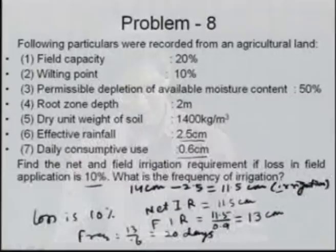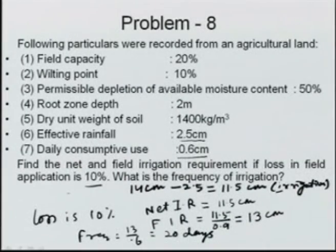Based on the field irrigation requirement of 13 cm and daily consumptive use of 0.6 cm, irrigation frequency is approximately 20 days.